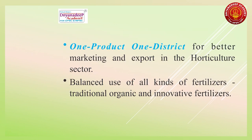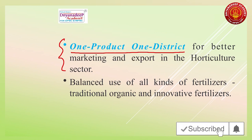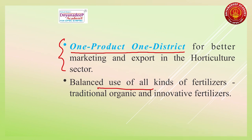The government is going to focus on 'One Product One District' for developing horticulture, so that each district will have expertise in producing a particular fruit that can be processed well. Balanced use of fertilizers is also mentioned but is a common point and less critical.